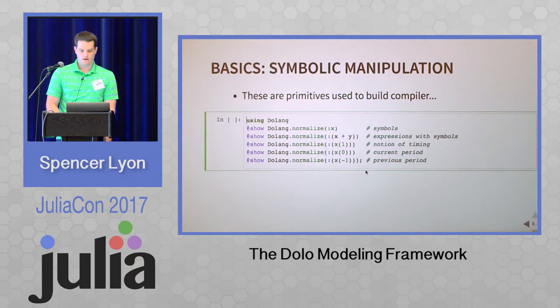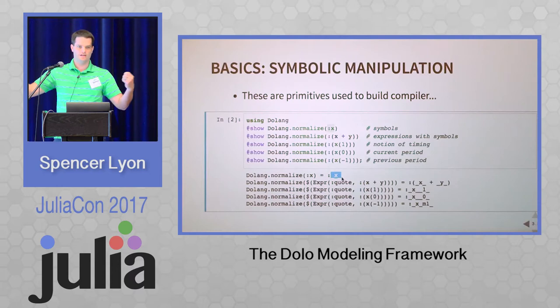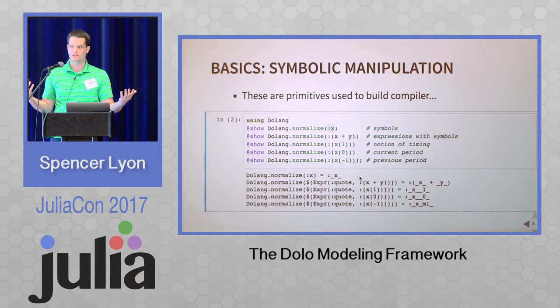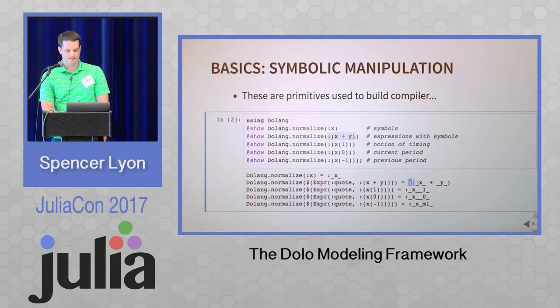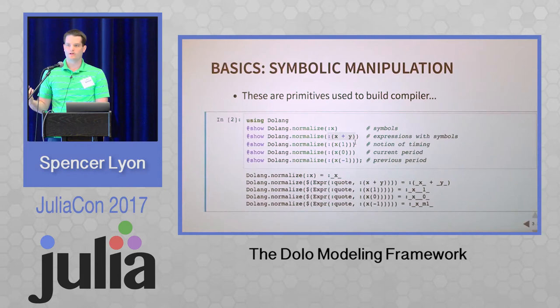Let's talk about the first half of DoLang: the symbolic manipulation primitives. There's a method called `normalize` — almost like `gensym` in base — that takes a symbol or expression and converts it to an internal representation in DoLang by wrapping it with underscores. DoLang also understands a special notion of timing, which is important for economic models where I care about past variables, today, and the future. The way I do that is through function-call syntax: I have a variable `x`, and using parentheses I pass an integer, so `x(1)` means x at time t+1, i.e., x tomorrow. And `x(0)` means a time-varying variable evaluated at the current period, whereas plain `x` is a static parameter that never changes.